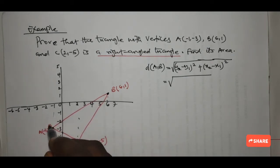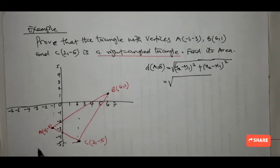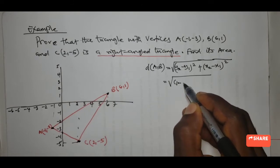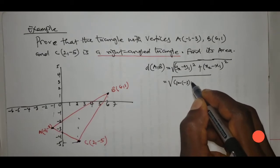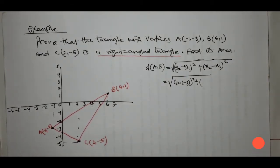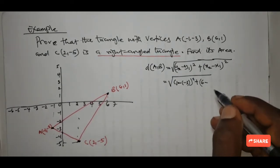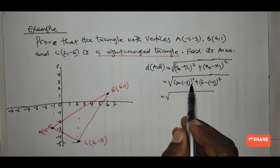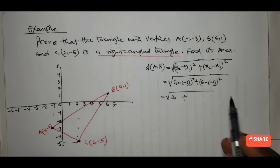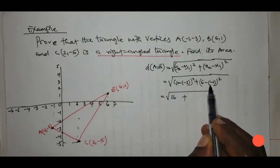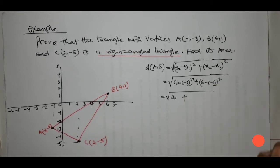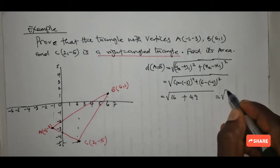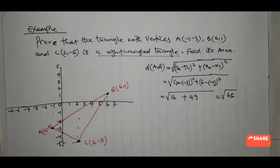For points A and B, we have x1=-1, y1=-3, x2=6, y2=1. So y2 minus y1 is 1 minus (-3), which is 1 plus 3 = 4, and 4 squared is 16. Then x2 minus x1 is 6 minus (-1), which is 6 plus 1 = 7, and 7 squared is 49. Adding these: square root of 16 plus 49 = square root of 65. Since this is a decimal, it is advisable to leave it in the form root 65.